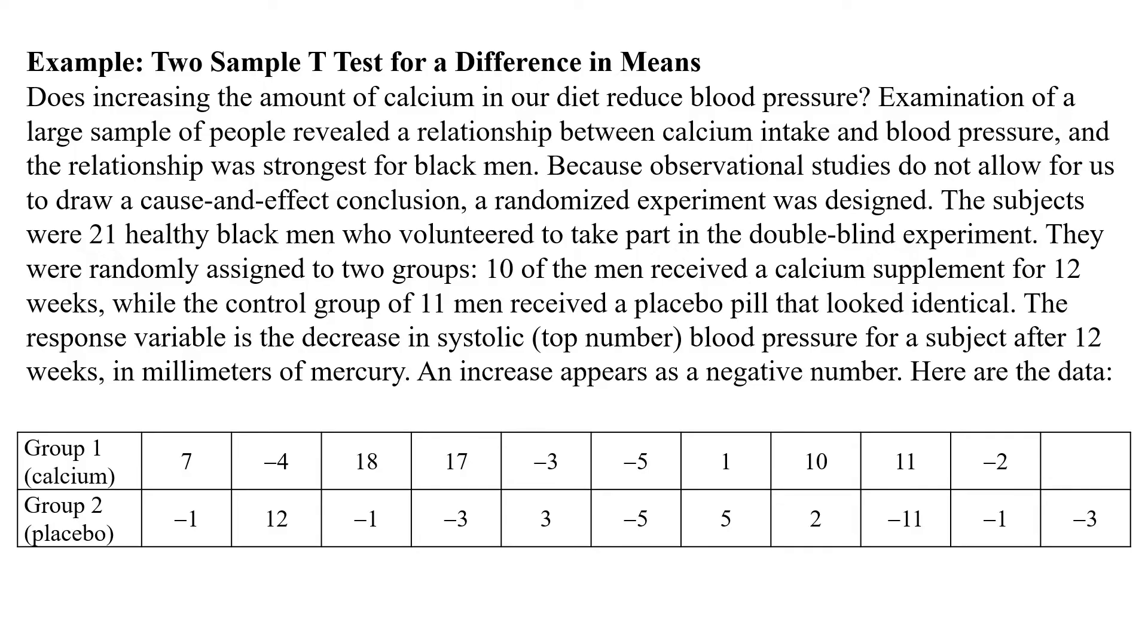So here's our example. The question is, does increasing the amount of calcium in our diet reduce blood pressure? So we're going to examine a large sample of people who revealed this relationship. And the relationship was strongest they found for black men. And because this was an observational study when they looked at this relationship, we can't quite draw that cause and effect conclusion, right? So we designed a randomized experiment with 21 healthy black men who volunteered to take part in this. They were randomly assigned to two groups. 10 received a calcium supplement for 12 weeks, and the control group received a placebo pill for 12 weeks. The response variable is the decrease in the systolic blood pressure for a subject after 12 weeks. An increase appears as a negative number.